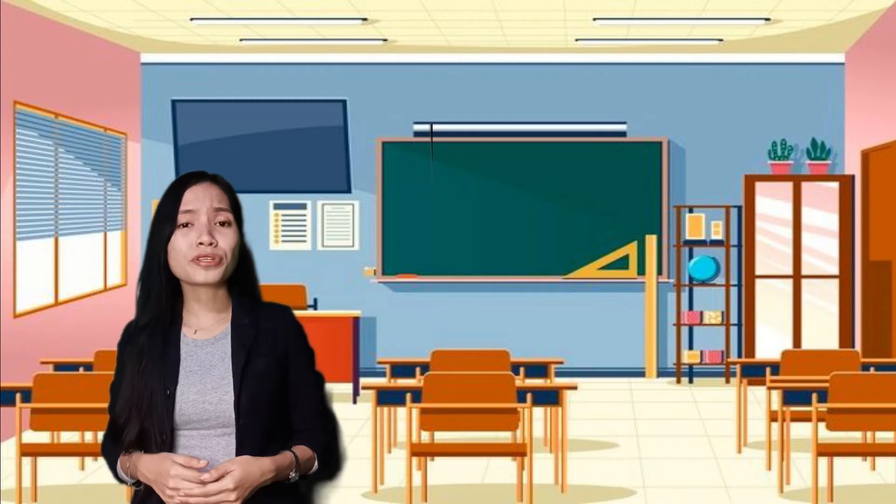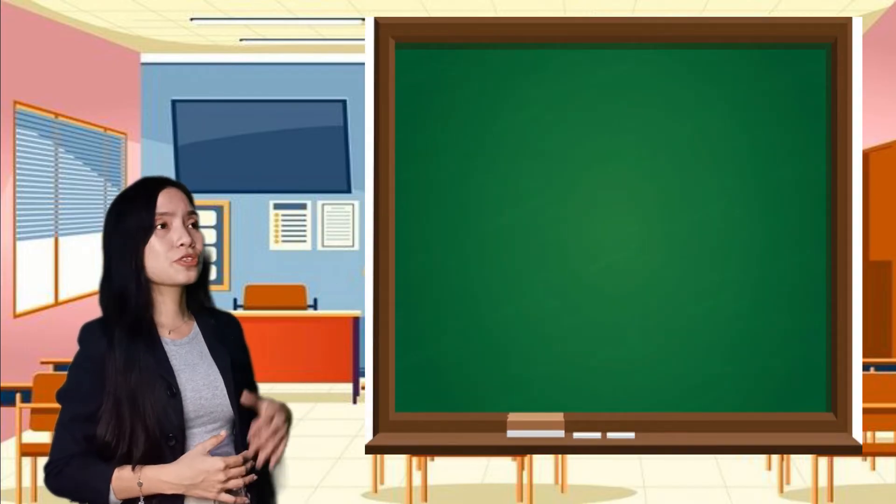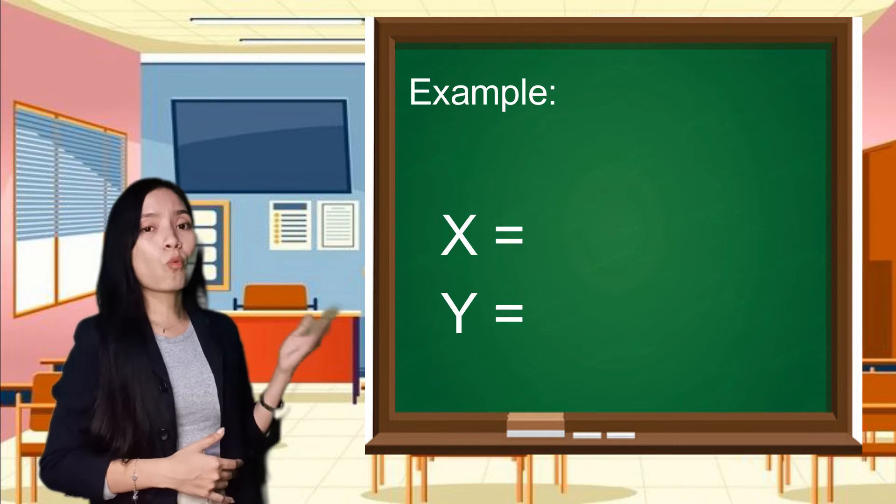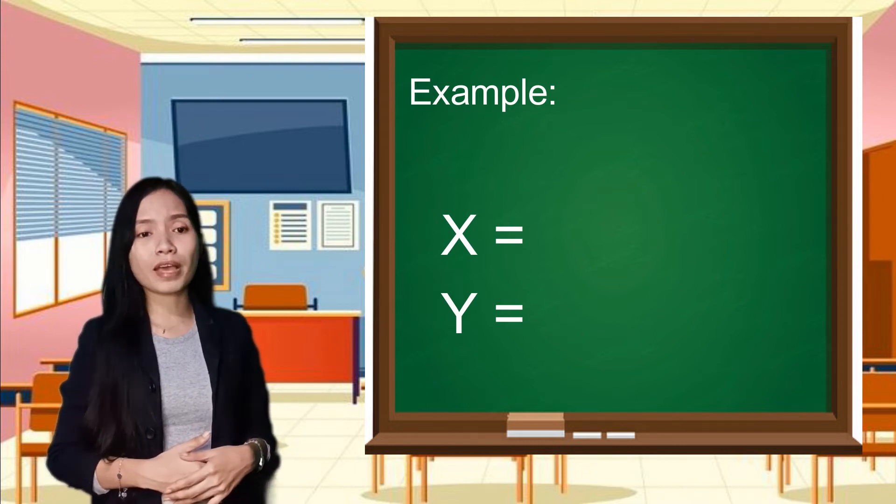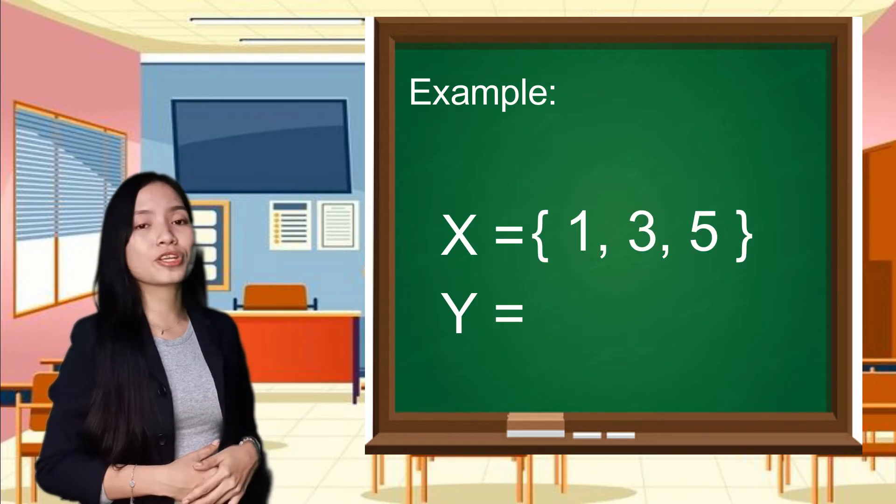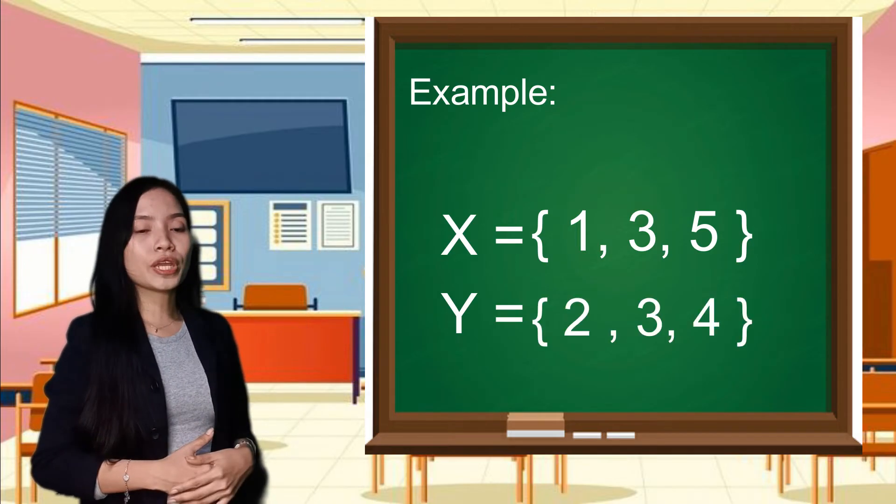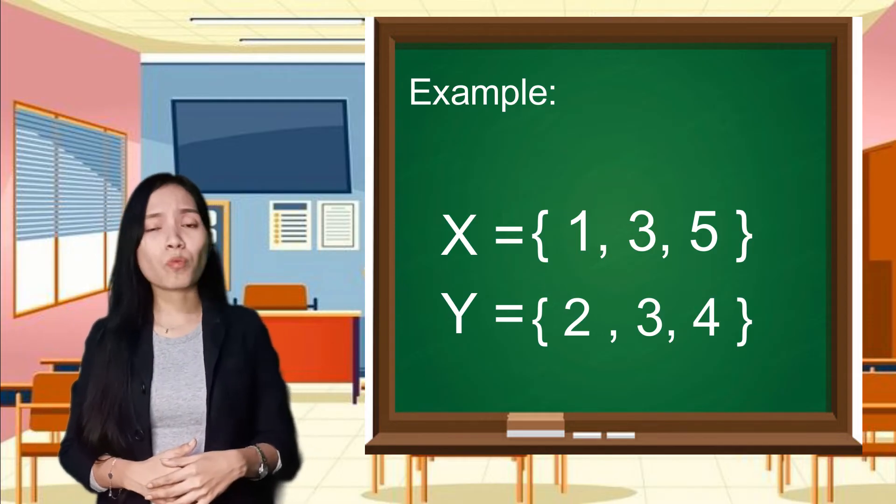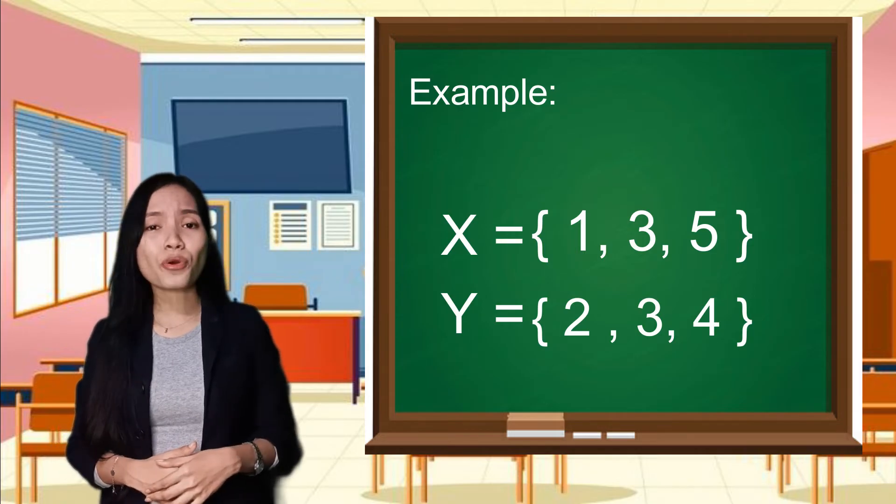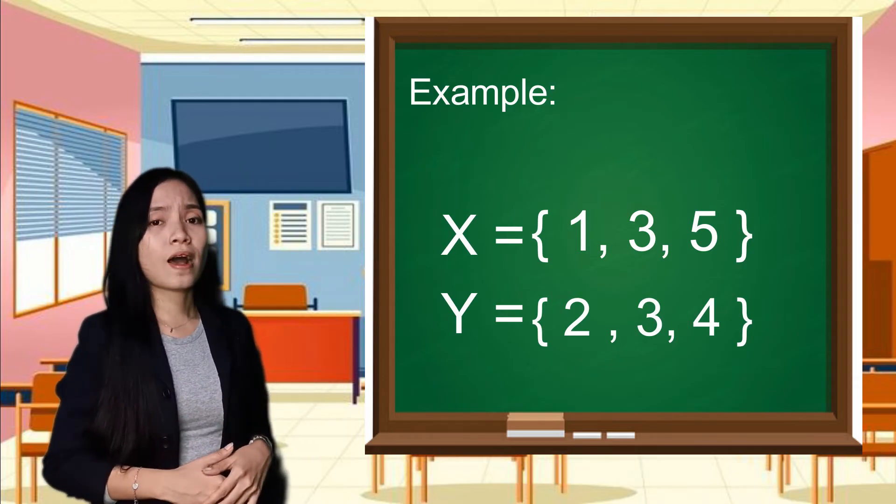So now to understand more about the joint set, let us have an example here. Consider a set X and set Y. So set X has elements of one, three, and five. Well, we have here the set Y, we have elements of two, three, and four. So now to check whether these sets is an example of a joint set, let us check every element or number in each set.